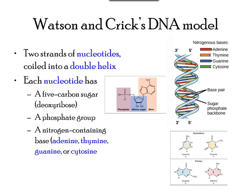There are two types of nucleic acids: DNA and RNA. The building blocks of DNA, or nucleotides, are composed of three parts: a five-carbon sugar, a phosphate group, and a nitrogenous base.